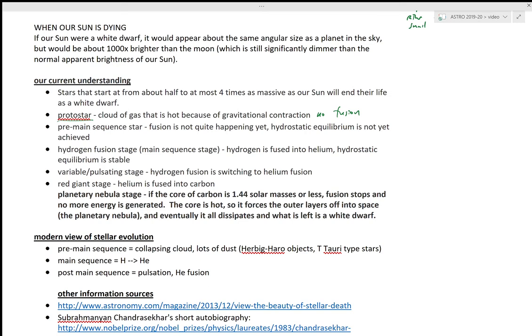We call it pre-main sequence star. Fusion is not quite happening yet because the hydrostatic equilibrium is not achieved. So we need that balance, that balance of radiation pressure coming out from the core and gravitational pressure from just all the mass of everything wanting to contract towards some singular point.